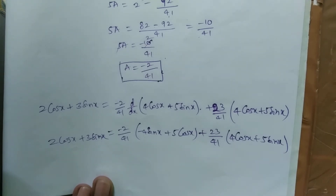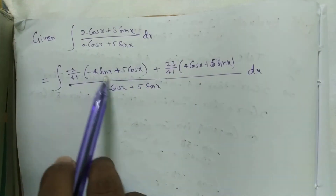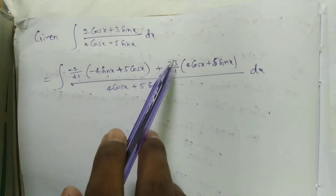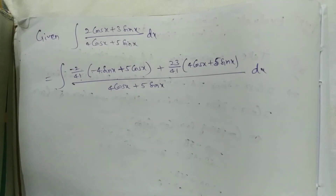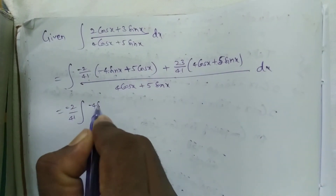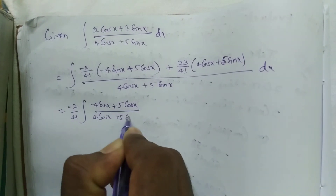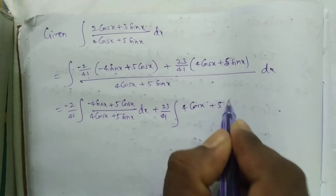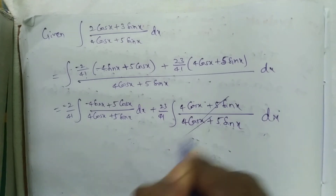Now applying this to the given integral: integral of (2 cos x + 3 sin x)/(4 cos x + 5 sin x) dx. Substituting and splitting: (-2/41) times integral of (-4 sin x + 5 cos x)/(4 cos x + 5 sin x) dx, plus (23/41) times integral of (4 cos x + 5 sin x)/(4 cos x + 5 sin x) dx. In the second integral, the numerator and denominator cancel.